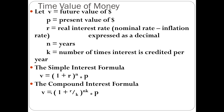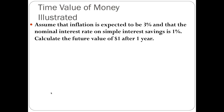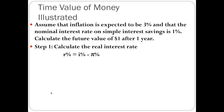Let's look at an example. Assume inflation is expected to be 3% and the nominal interest rate on a simple interest savings account is 1%. We'll calculate the future value of money after one year. The first step is to calculate the real interest rate: real rate equals nominal rate minus inflation rate, so 1% minus 3% equals negative 2%, which expressed as a decimal is negative 0.02.